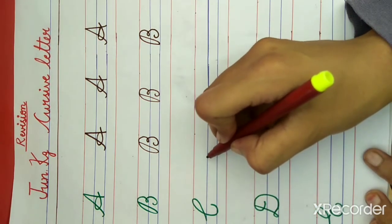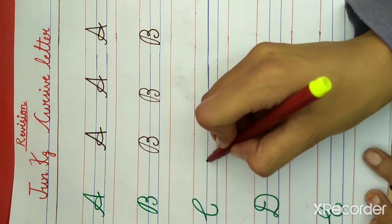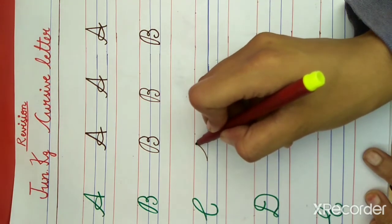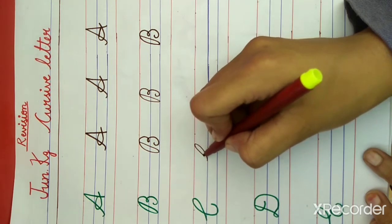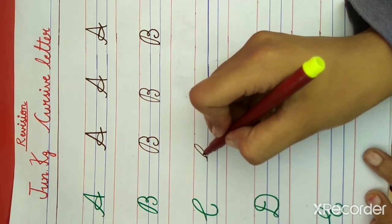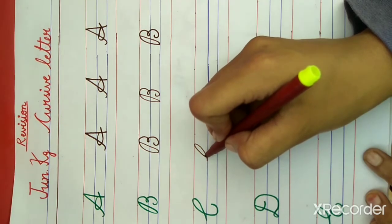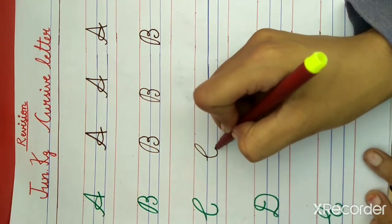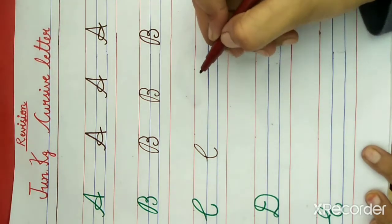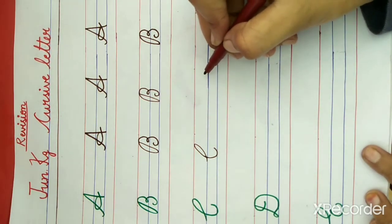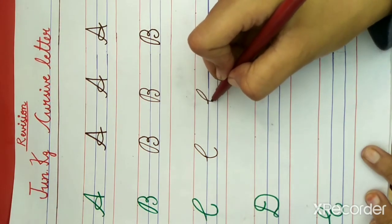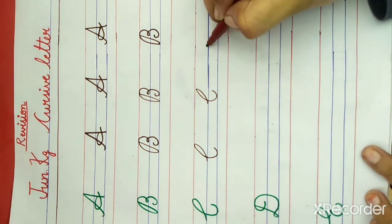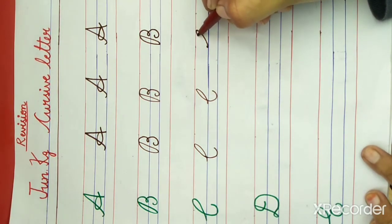C for cat. Now put your pencil on the blue line and draw a curve, one more curve crossing to the first curve, and a small semicircle. What is this? C. C for cat. What is the spelling of cat? C-A-T. Cat.